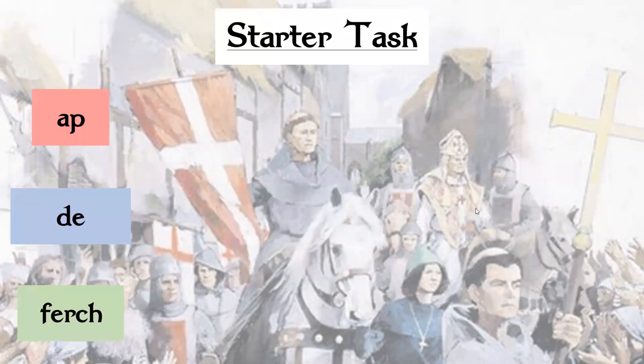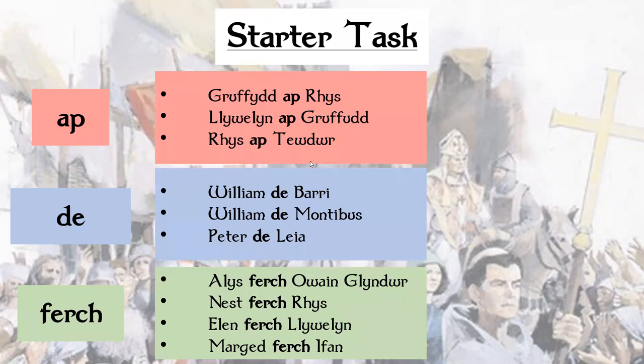For our starter task, over the next coming lessons you'll probably see a few names with these words: Ap, De, and Ferch in the middle of them. Here are a few examples of some names you may see: Griffith Ap Rees, William De Barry, and Alice Ferch o ein Glyndor. For your starter task, I want you to write down what you think these three words may mean — so that's Ap, De, and Ferch. Pause the video here now for a few moments while you write those down.